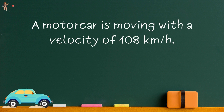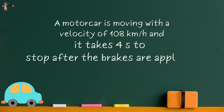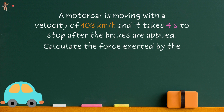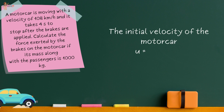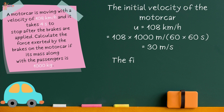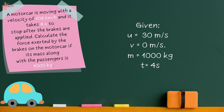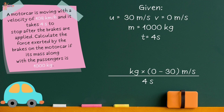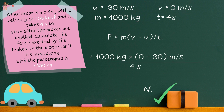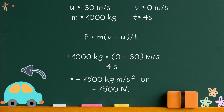A motor car is moving with a velocity of 108 km/h (30 m/s) and takes 4 seconds to stop after brakes are applied. Calculate the force exerted by the brakes if the mass with passengers is 1000 kg. Using F = m(v − u)/t: F = 1000 × (0 − 30)/4 = −7500 newtons. The negative sign tells us that the force exerted by the brakes is opposite to the direction of motion of the motor car.